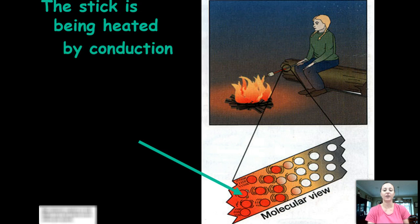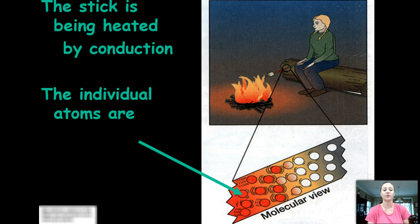Here we have a molecular view. The rod or the stick that the girl is using to roast her marshmallow is being heated by conduction. The temperature of the fire is going through that rod, and eventually her hand may get hot.